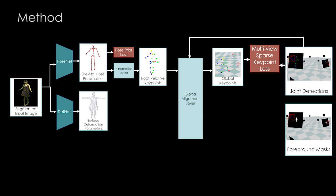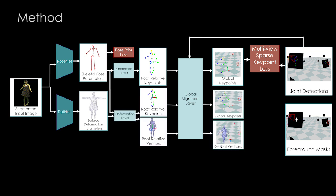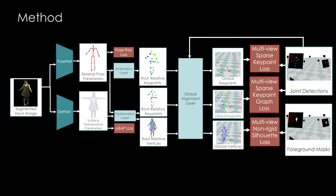Our second network, DefNet, regresses the dense surface deformation in the form of embedded deformation graph parameters. Our deformation layer takes the pose and graph parameters and deforms and poses the template. For supervision, our method leverages a multi-view silhouette loss that ensures that the projected boundary of the deformed mesh matches the image silhouettes. Further, we impose a sparse keypoint graph loss and a spatially varying local smoothness regularizer.